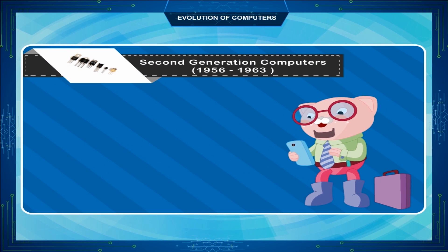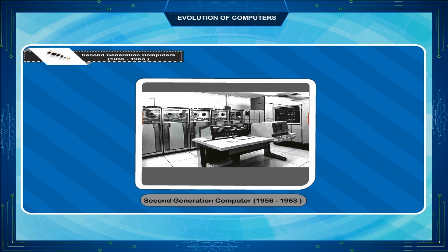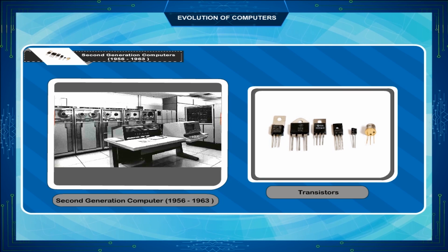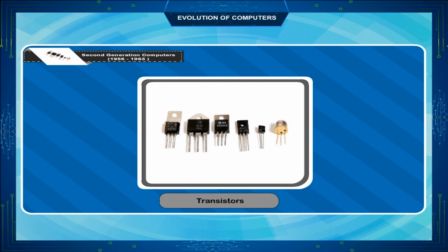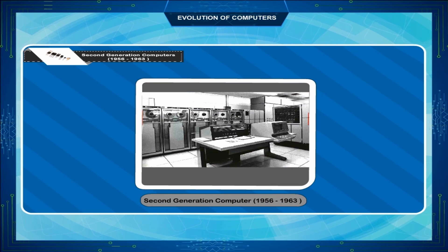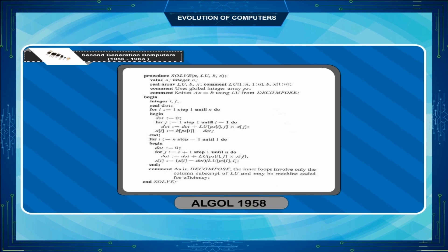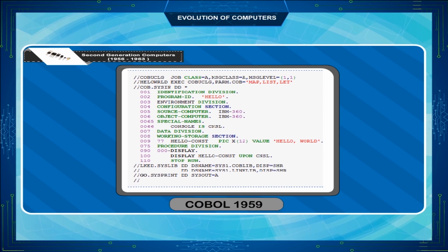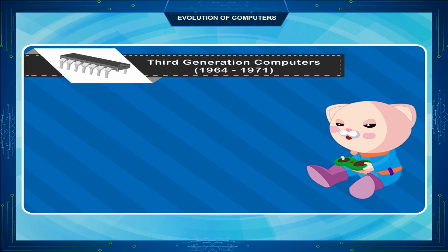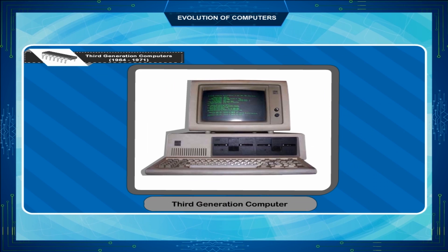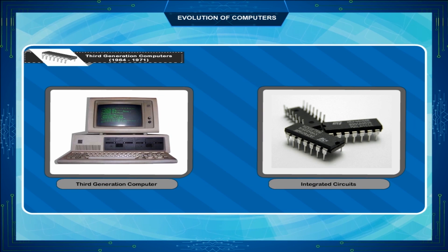Second generation computers had transistors as their main electronic component. Transistors were very small in size and faster in speed compared to vacuum tubes. During the second generation, many high-level programming languages were introduced, including Fortran in 1956, ALGOL in 1958, and COBOL in 1959.